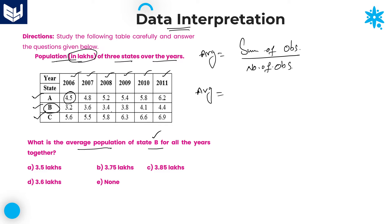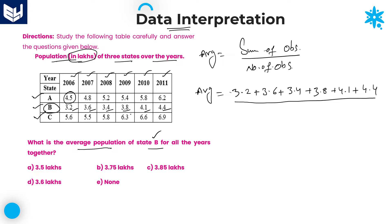The entire second row is indicated by state B. You can add all the values: 3.2 plus 3.6 plus 3.4, and then 3.8, 4.1, plus 4.4. These are the 6 values that you need to add. This is the total sum of state B divided by 6 values. Don't forget to multiply the numerator value with lakhs.